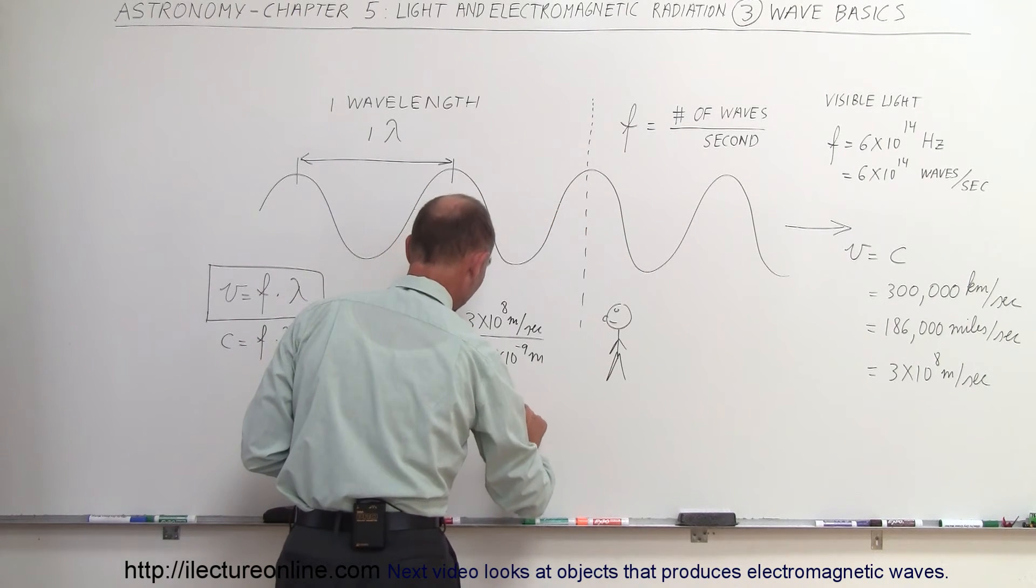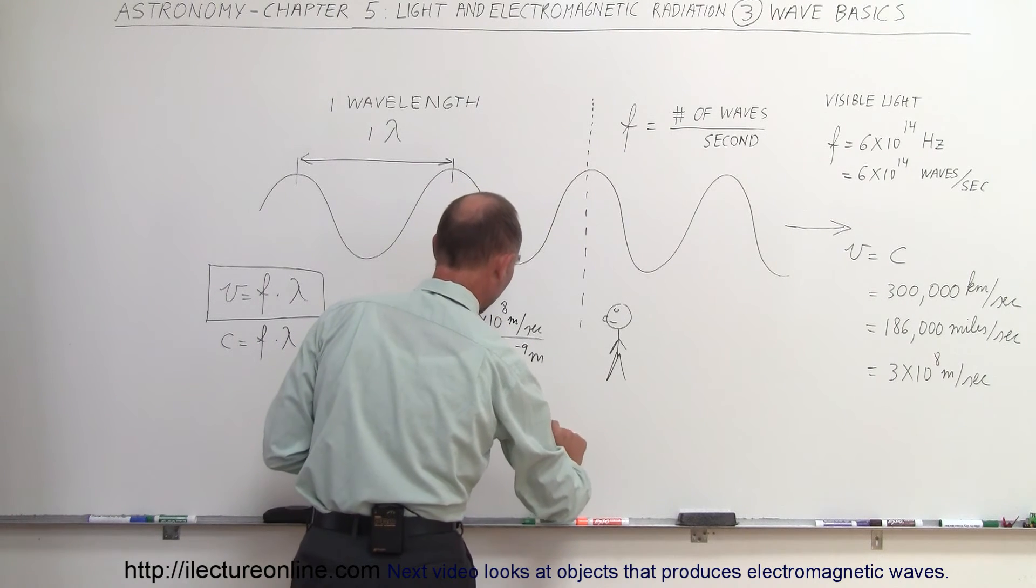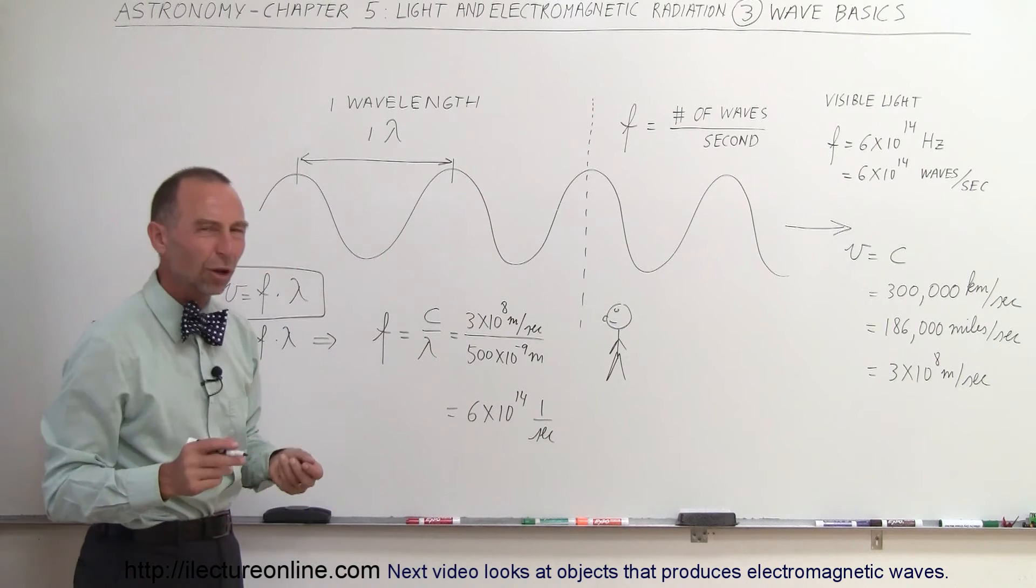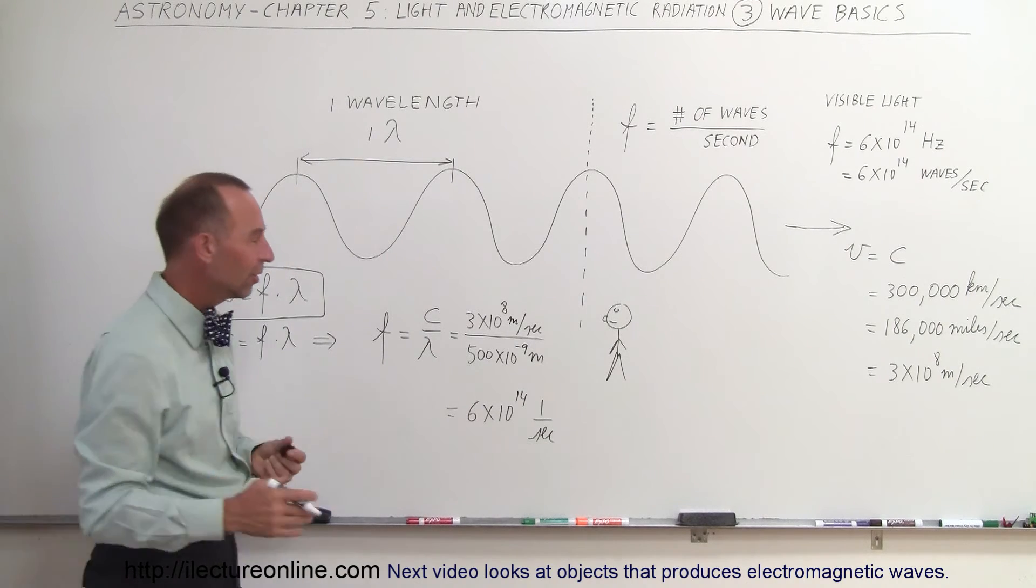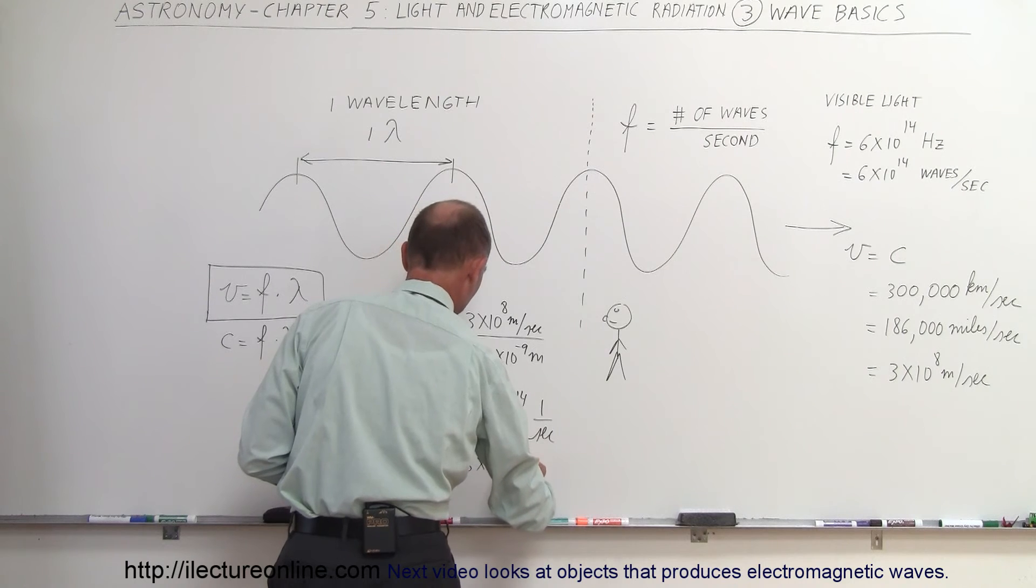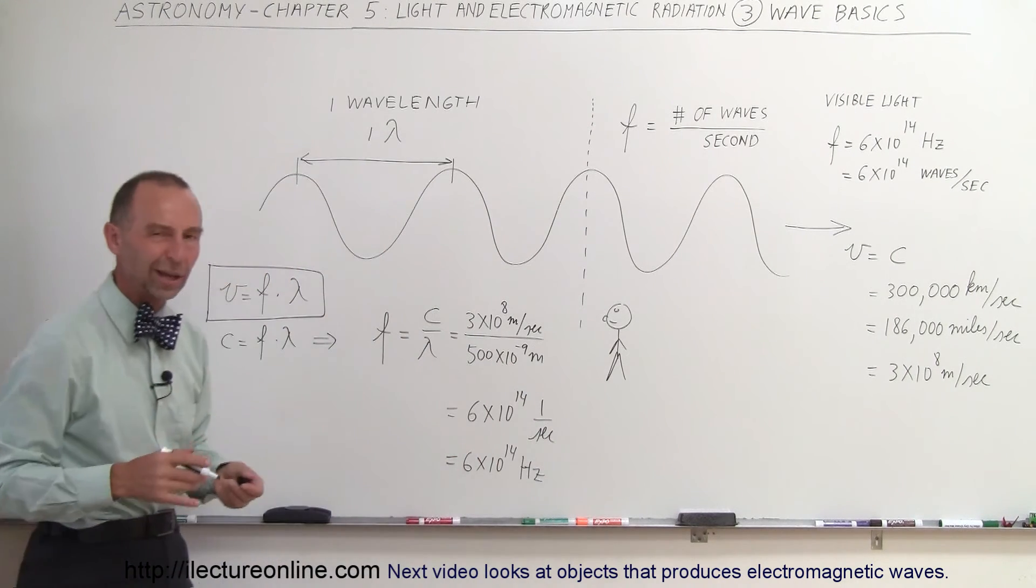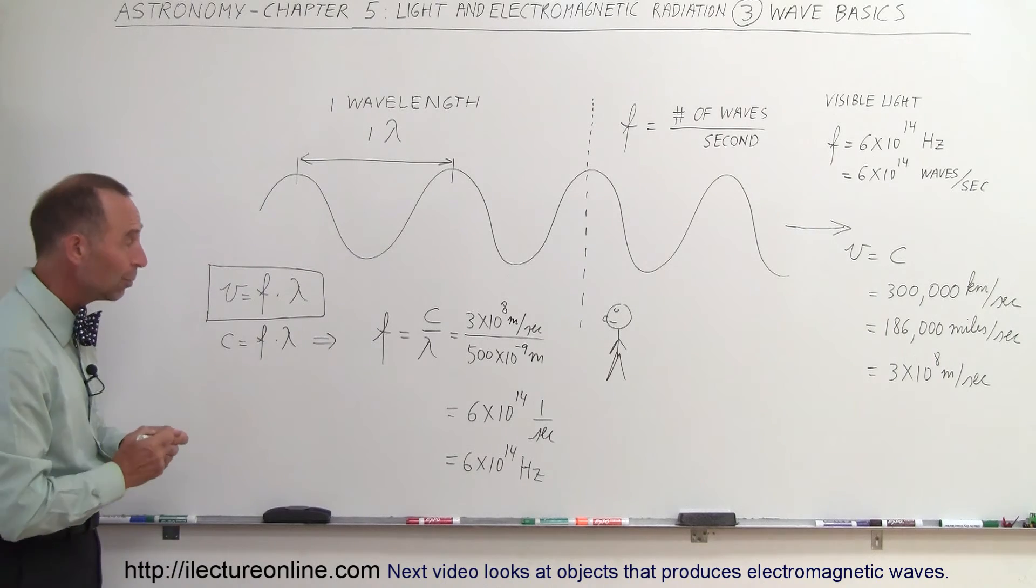6 times 10 to the 14th, that would be meters cancel out, 1 over seconds. So, the 1 over seconds unit is another way of writing hertz. It's the frequency. So, we can write this as 6 times 10 to the 14th hertz. So, hertz is the same as 1 over seconds or cycles per second or waves per second. That would be the frequency.